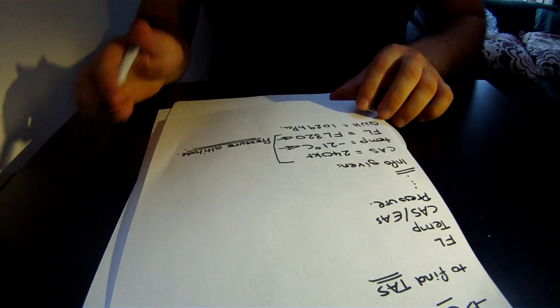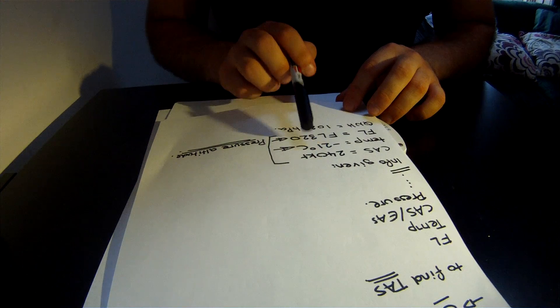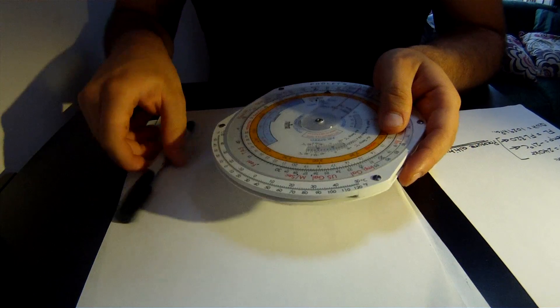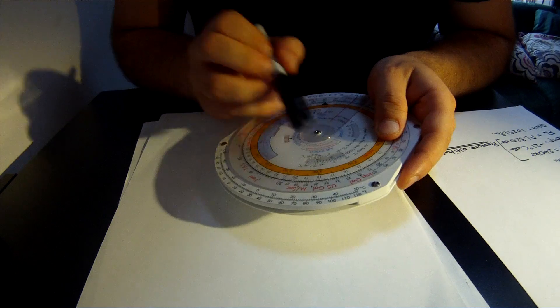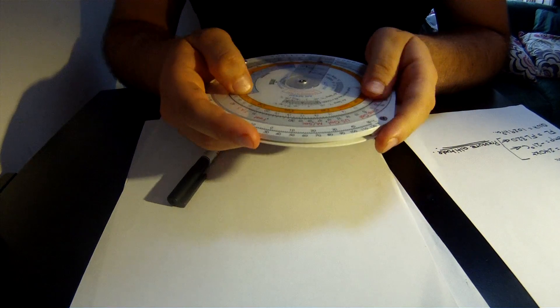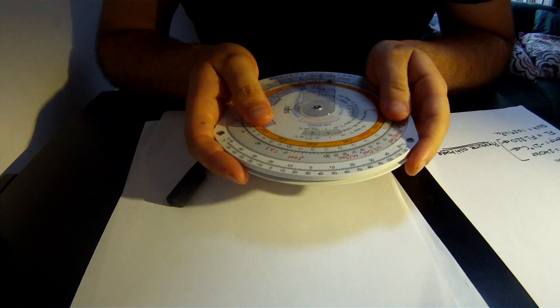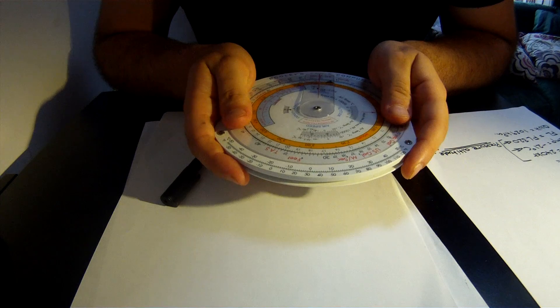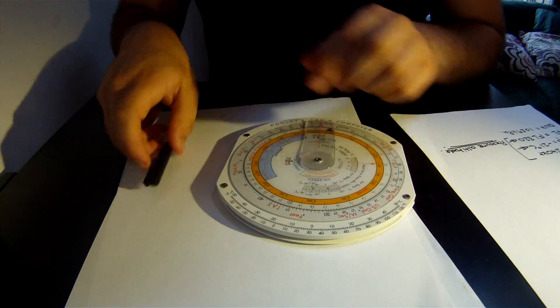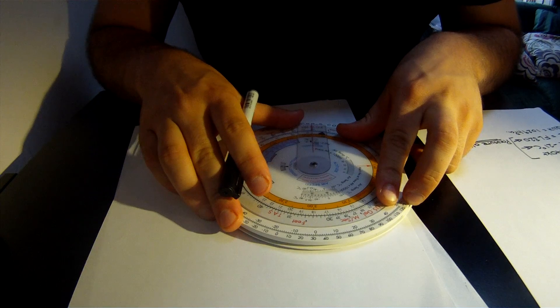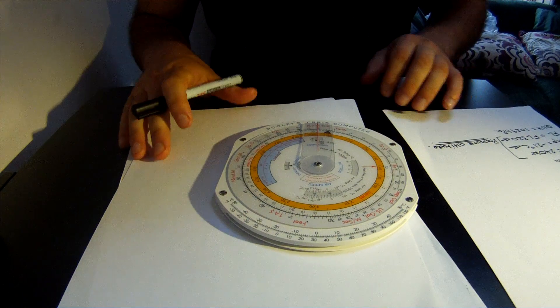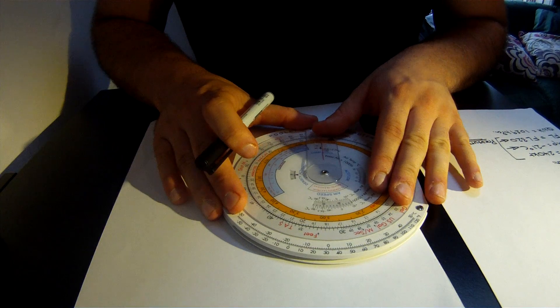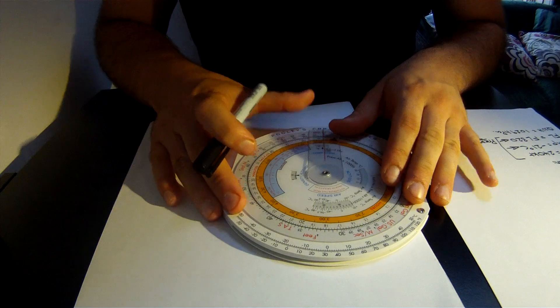If you look back at the question, it says at minus 21 degrees Celsius, flight level 320. So what we have to do is align minus 20 degrees Celsius with flight level 320. There you go. You can see right here flight level 320 with minus 20 degrees. You can actually move it a bit since it's minus 21.